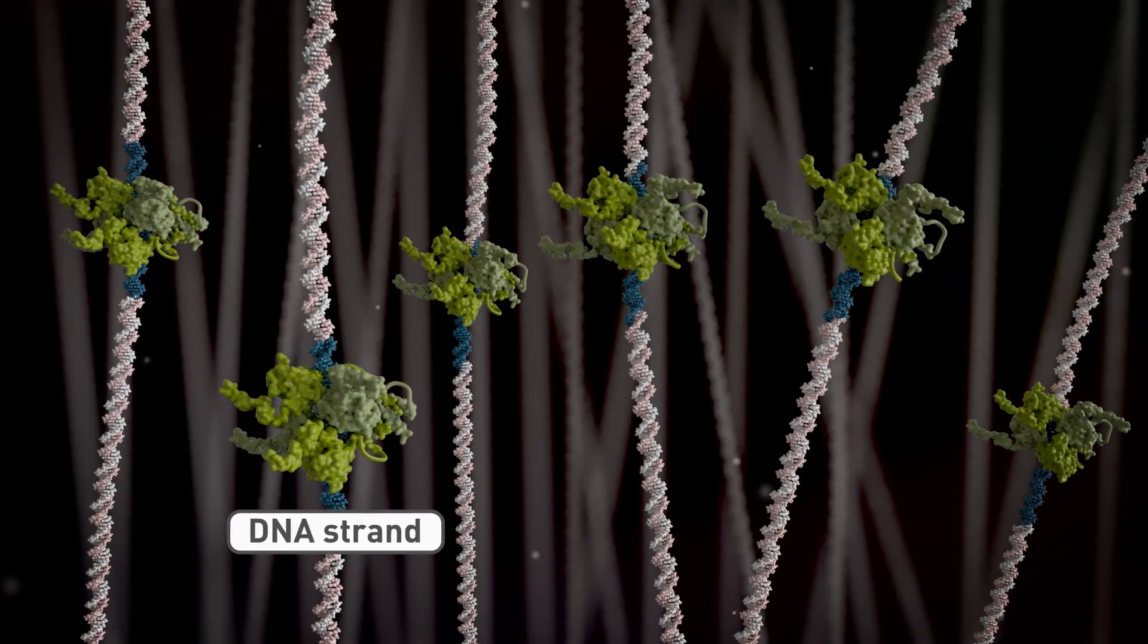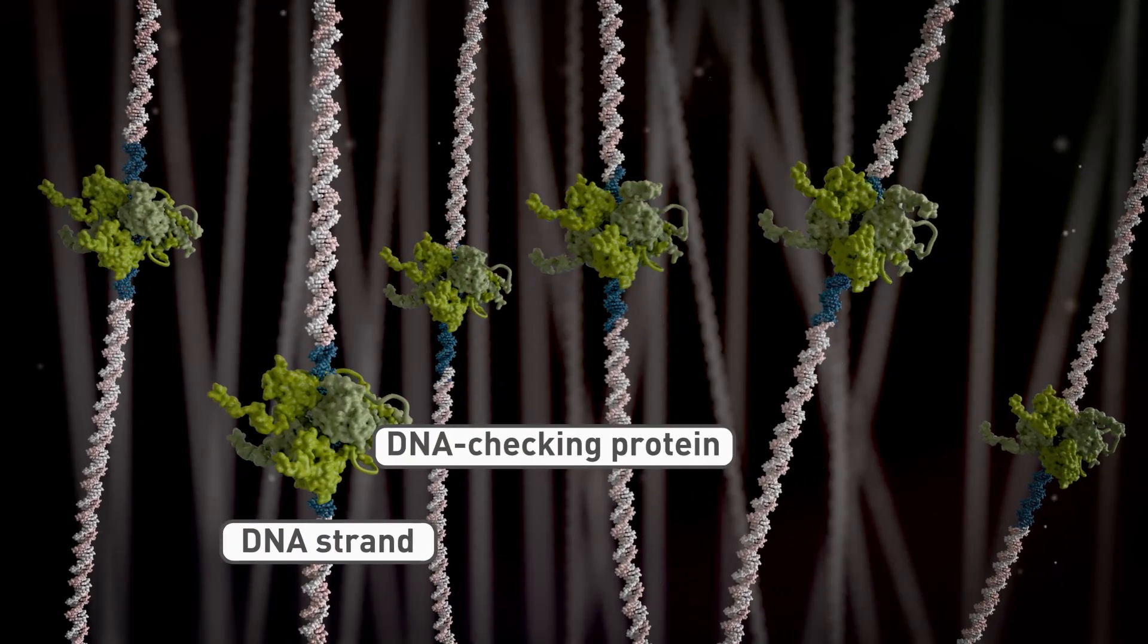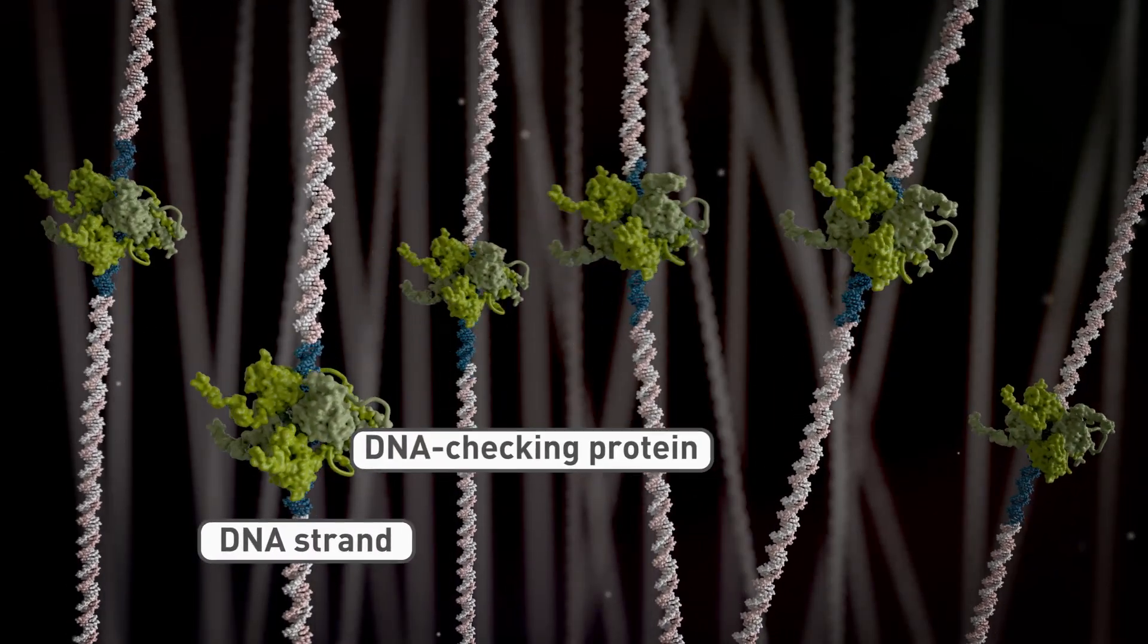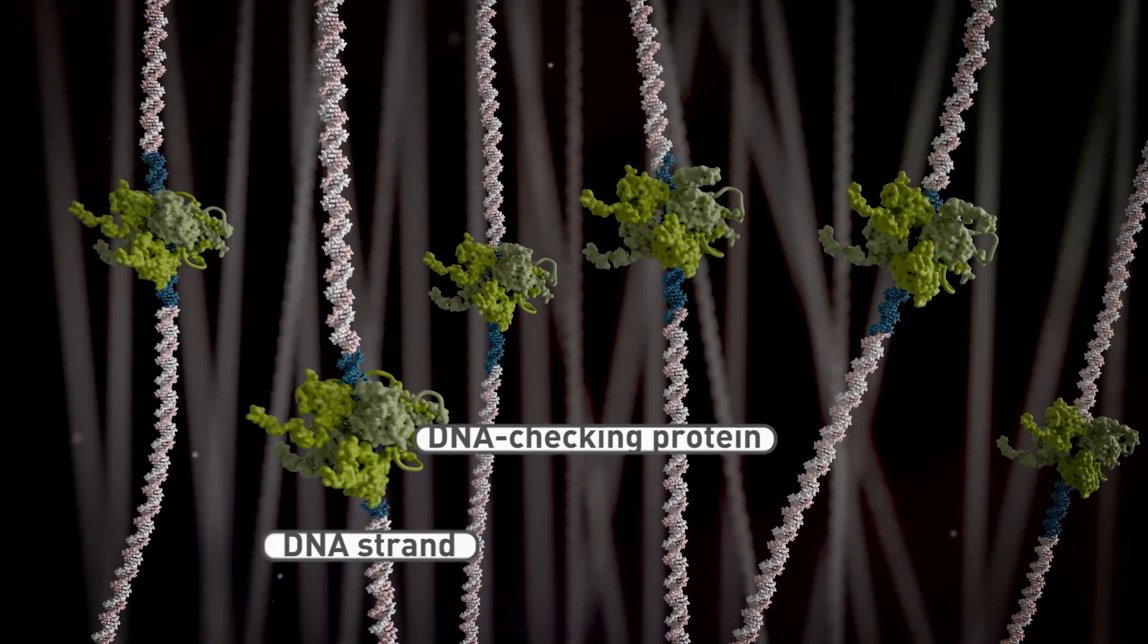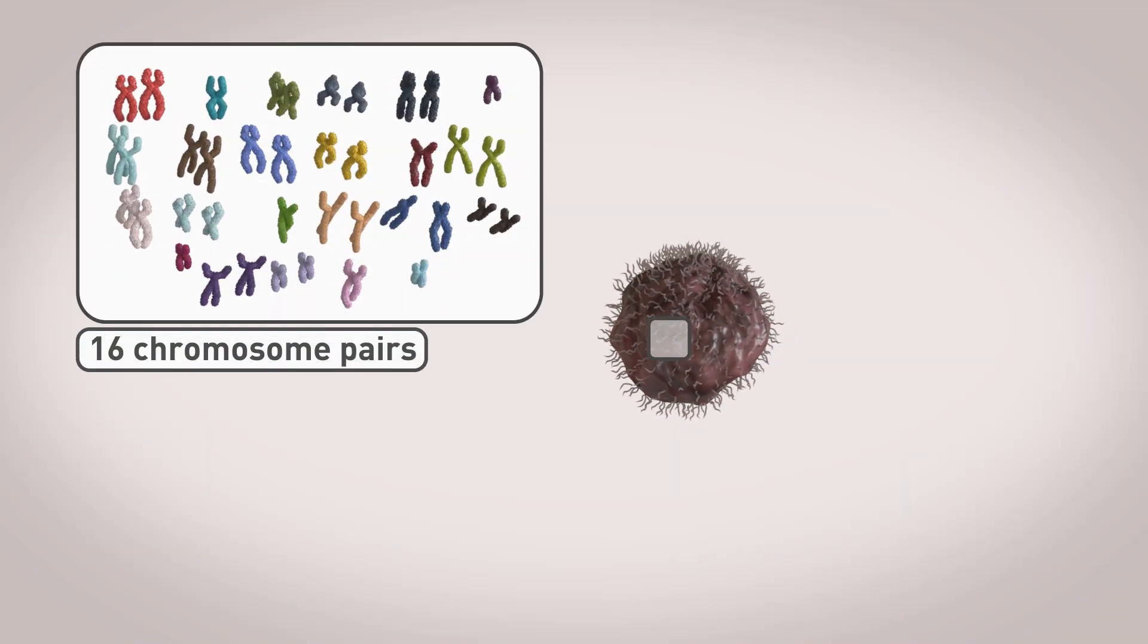Luckily, cells have a number of safety mechanisms in place. Protein molecules check the DNA for faults and stop cells with damaged chromosomes from dividing. If the damage is particularly bad, these safety mechanisms can even force the cell to self-destruct.